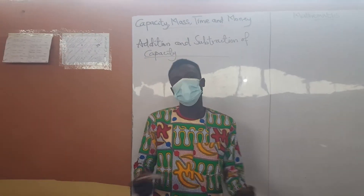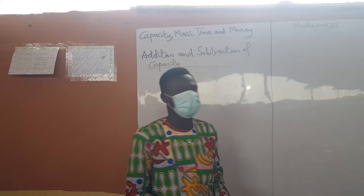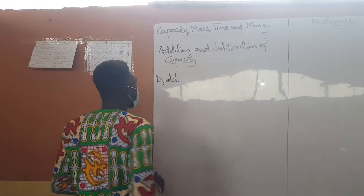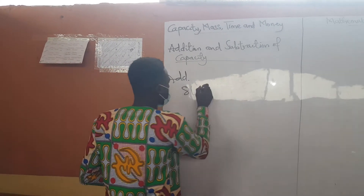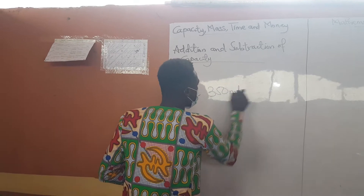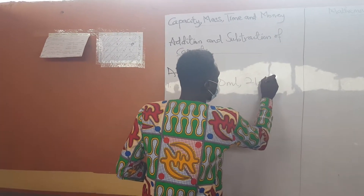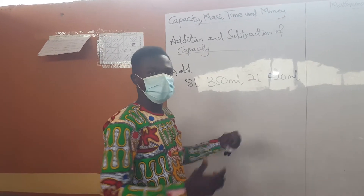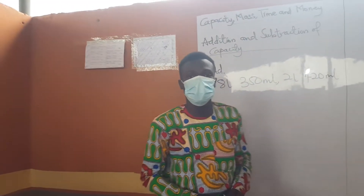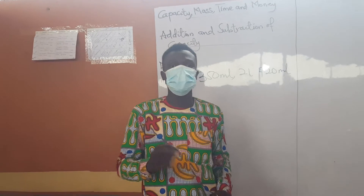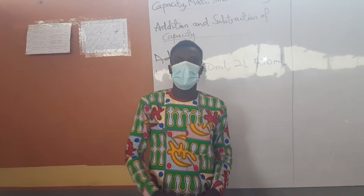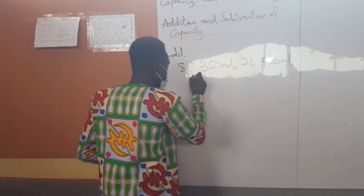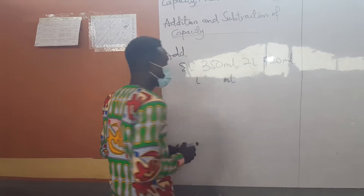So let's look at the addition and subtraction of capacity. Let's start with addition. If I'm to add 8 liters 350 milliliters to 2 liters 420 milliliters, how can I add these two? When you are adding, you have to make sure that all numbers with liters should be under liters and all milliliters under milliliters. So this is my liters column and this is my milliliters column.